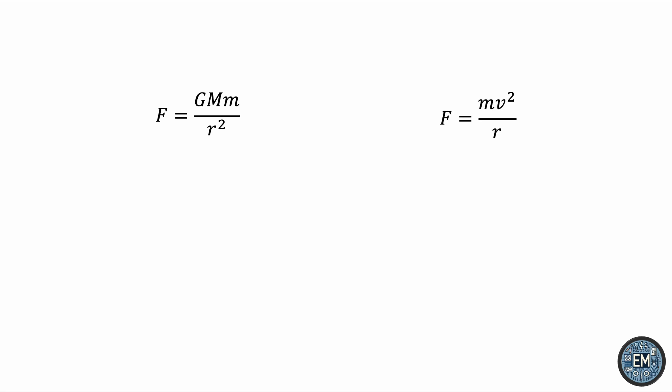We know that the gravitational force is the centripetal force, so equating these forces to one another, we can see that small m cancels out. This tells us that we don't need to know the mass of the Earth in order to conclude the mass of the Sun using this method. We can see that one r term also cancels out, so we get GM/r equals v². Solving for M, the mass of the Sun, we get r/G times v².